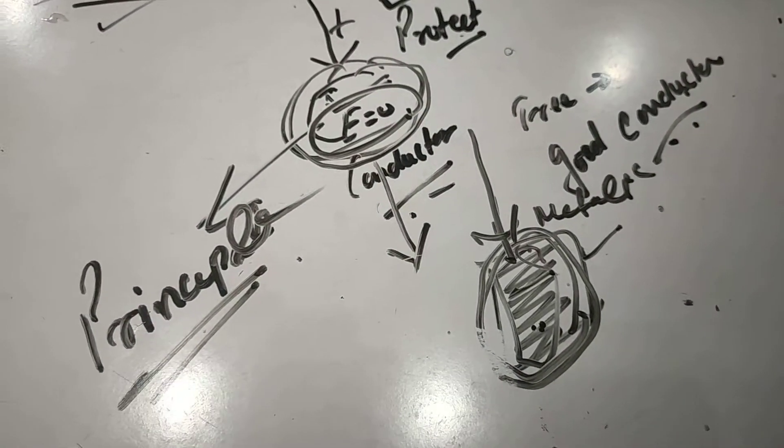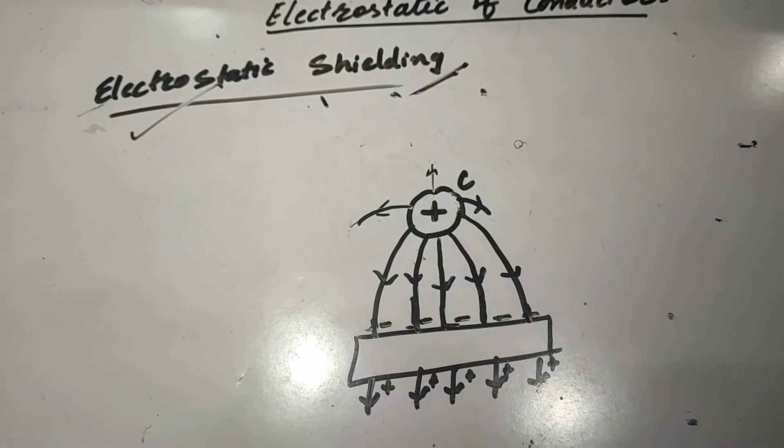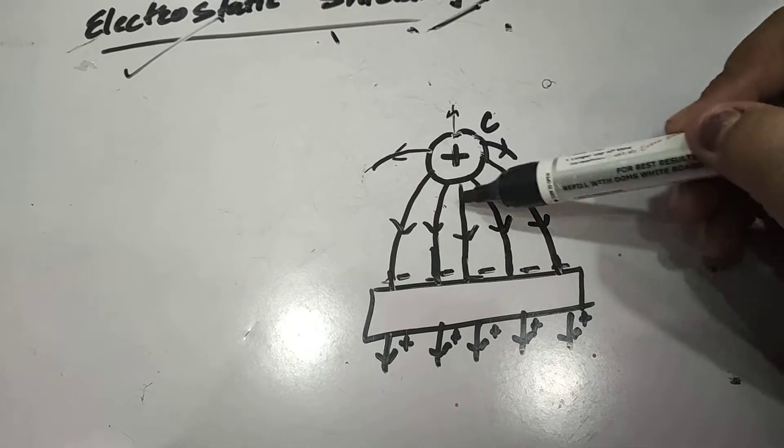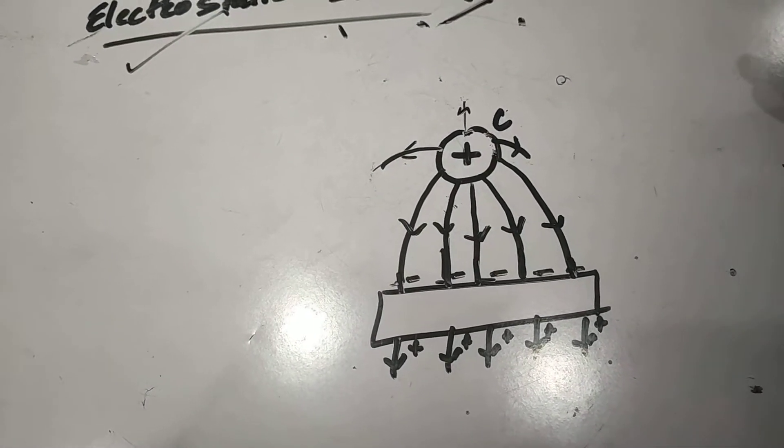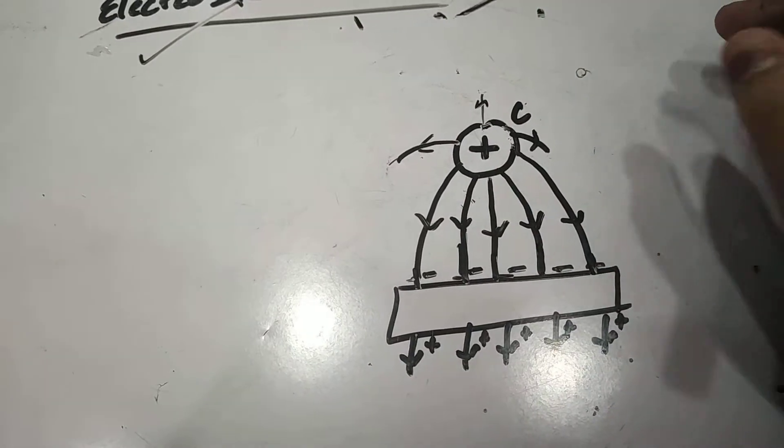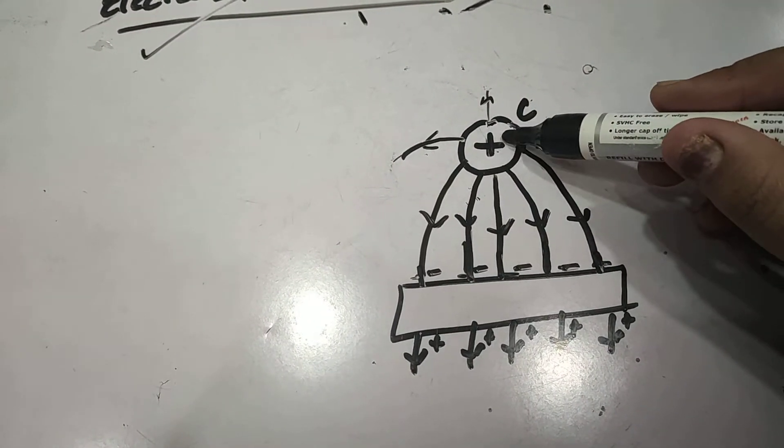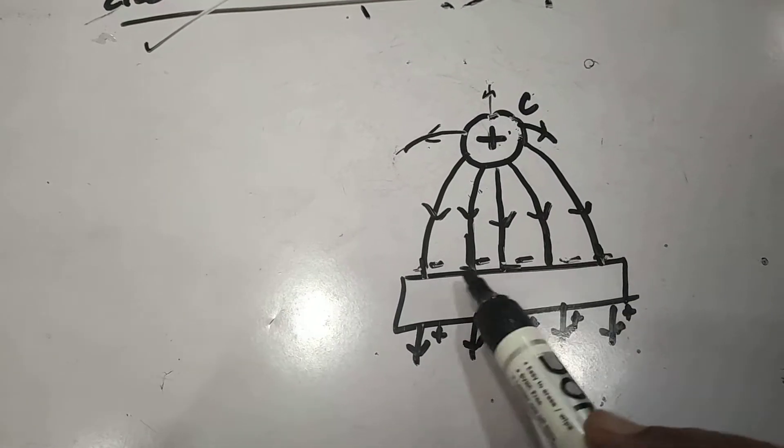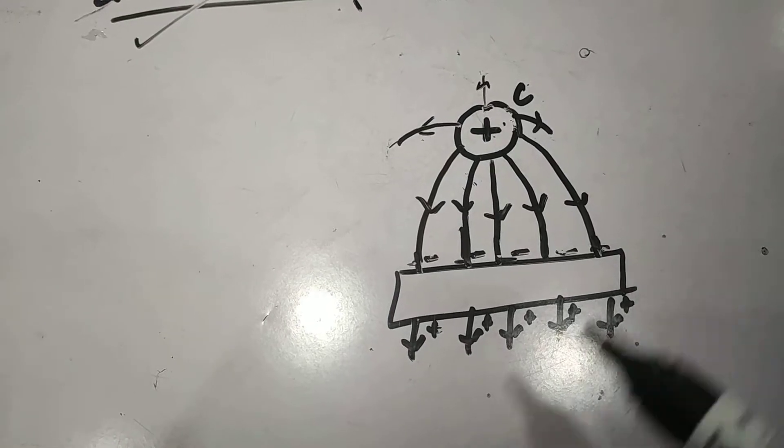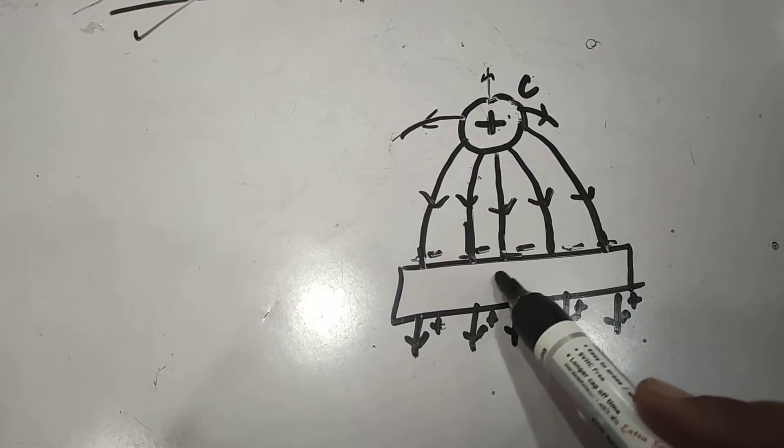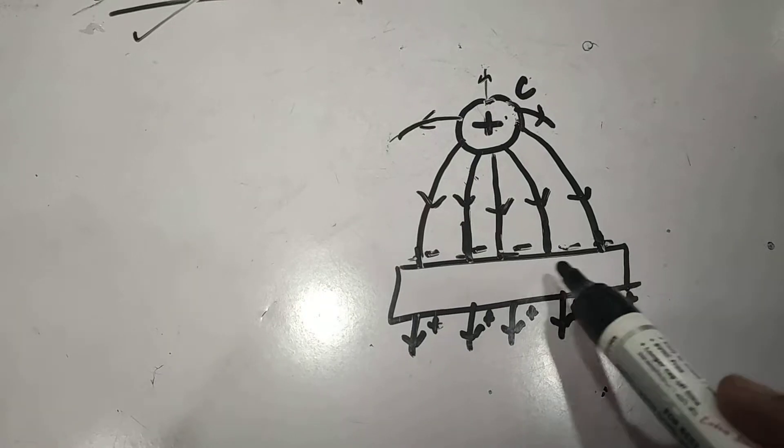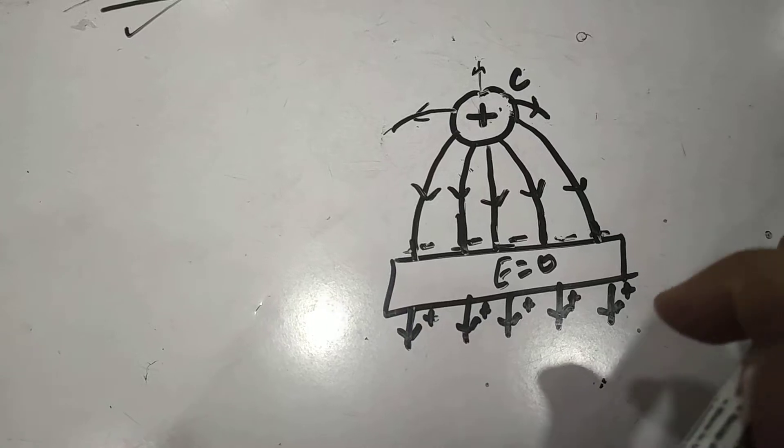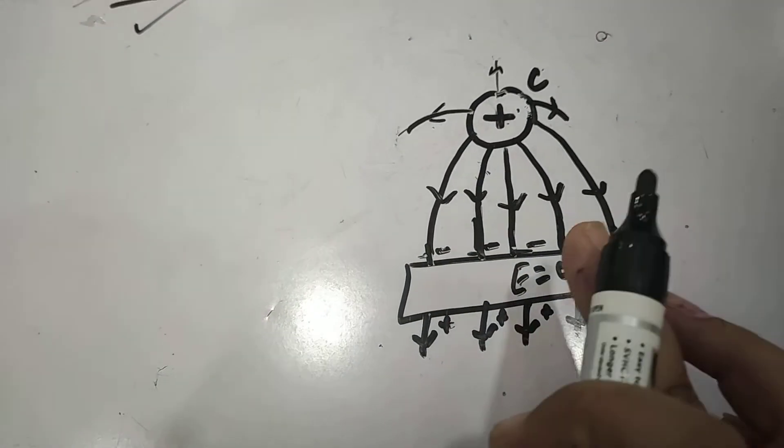This phenomenon could be better understood by this diagram. Here you can see C is the conductor having positive charge plus Q. Due to this charge plus Q, some negative charge has developed across the ends of the conductor and positive charge on the other side. But inside the conductor, electric field is zero. No field lines are shown here, meaning E value is zero. It means whatever we keep inside this conductor will remain protected from the outside electric effect.